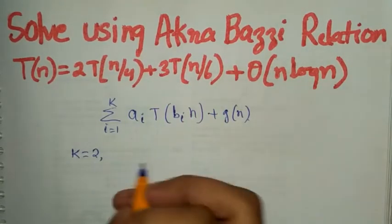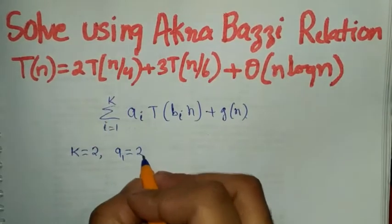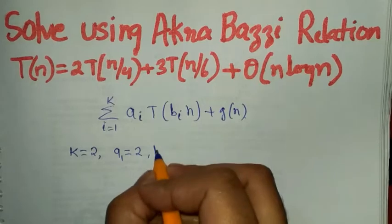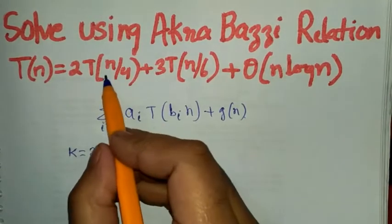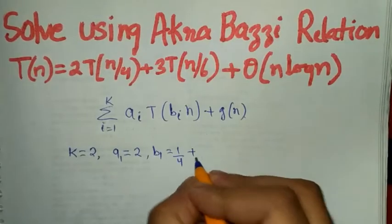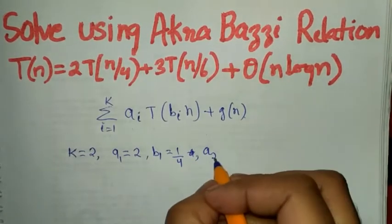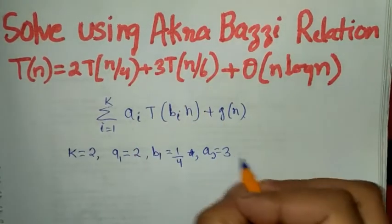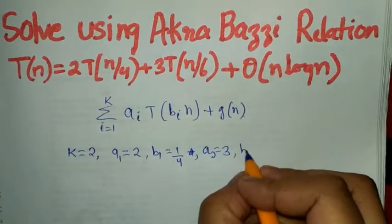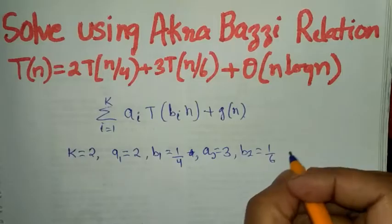So k equals 2. Now a1 will be 2, and b1 will be 1/4. And a2 will be 3, and b2 will be 1/6. And g(n) will be...